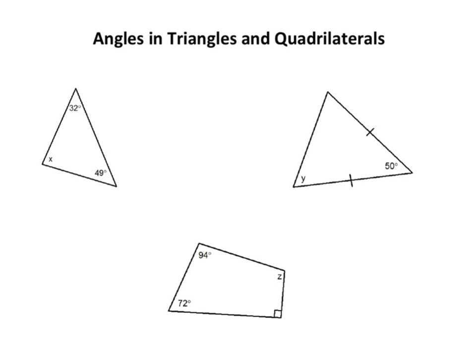We're looking to find some missing angles in triangles and quadrilaterals here. We should know that angles in a triangle add up to 180 degrees, and 360 degrees for quadrilaterals.